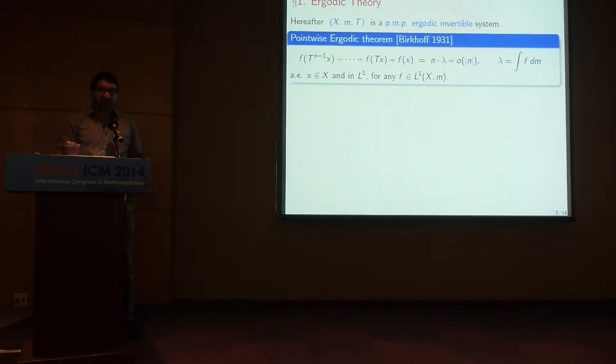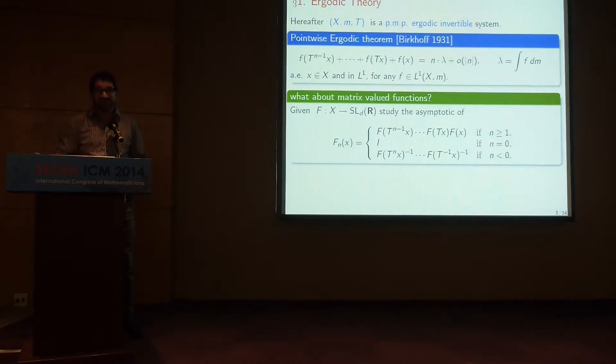However, in practice, you often need not only add functions along orbits, but sometimes you need to multiply matrices along orbits. Suppose that you have a matrix valued function. I'll assume it is in SL(d,R). The whole point is non-commutativity of matrix multiplication. The determinant can always be cleared out. So we look at F(x) times F at the next point and the next point and so on. You extend this definition, this sequence of products also in the negative range by this formula.